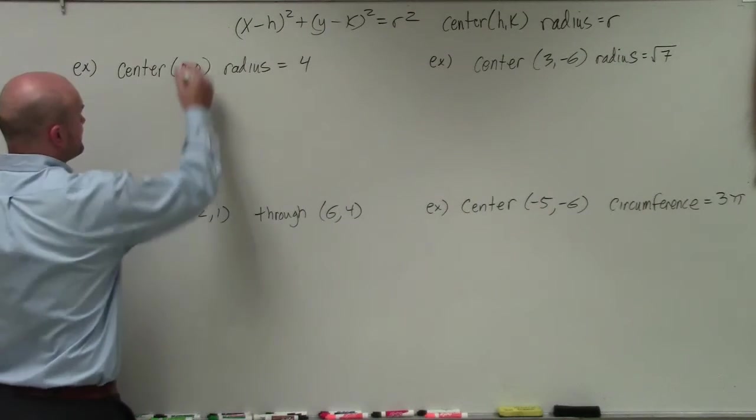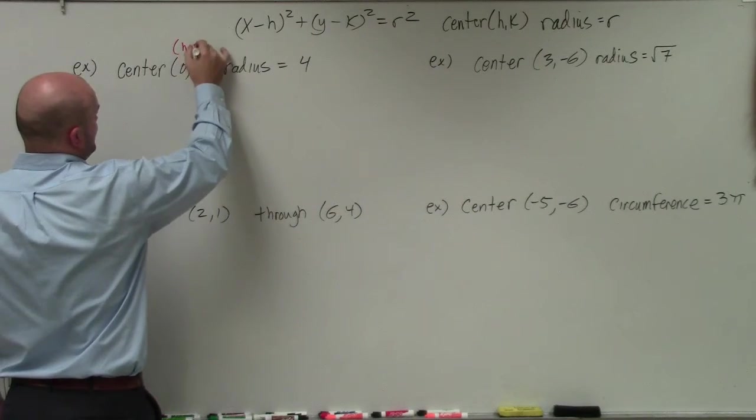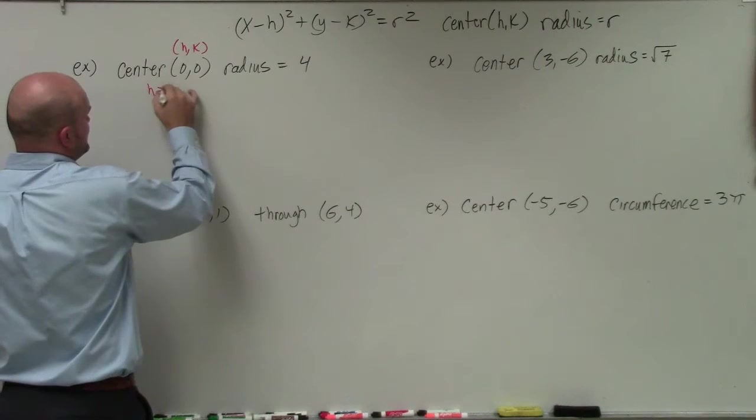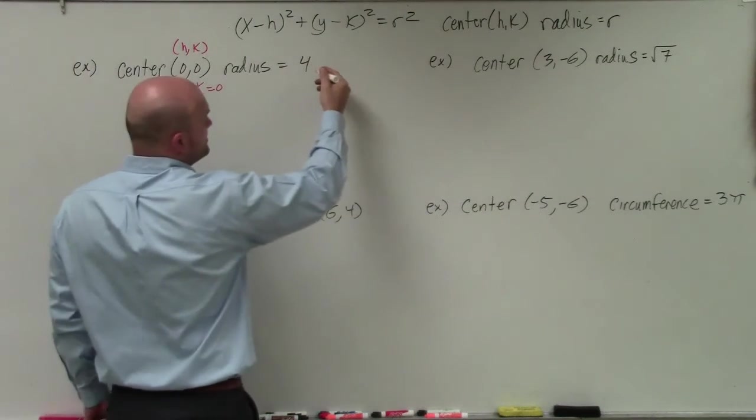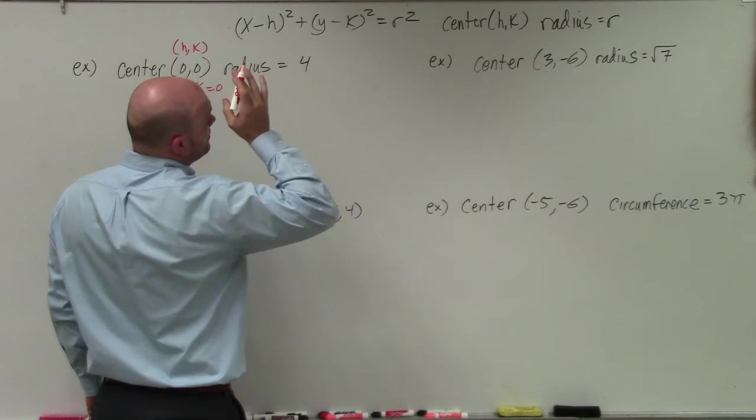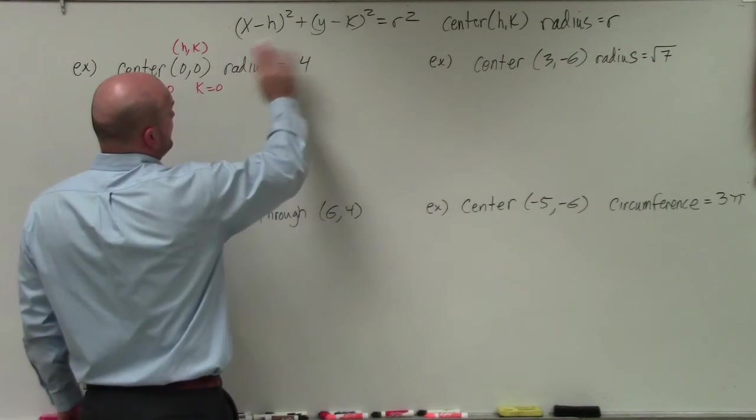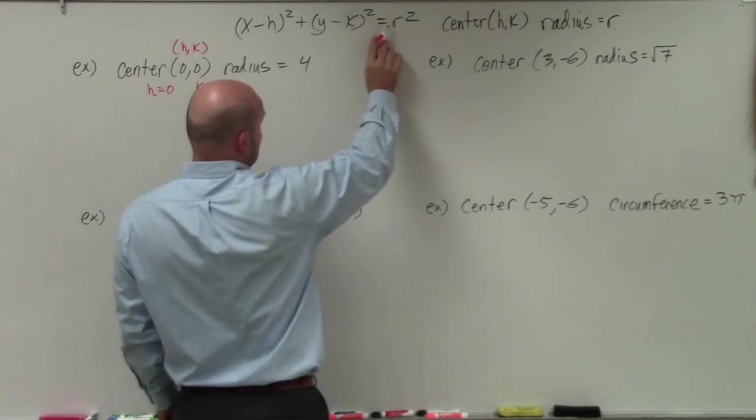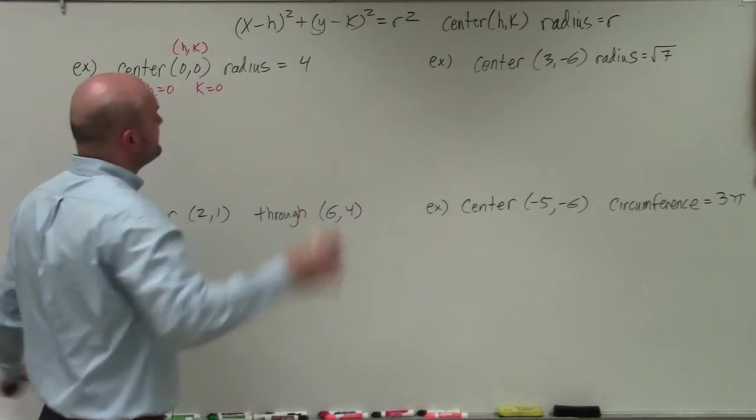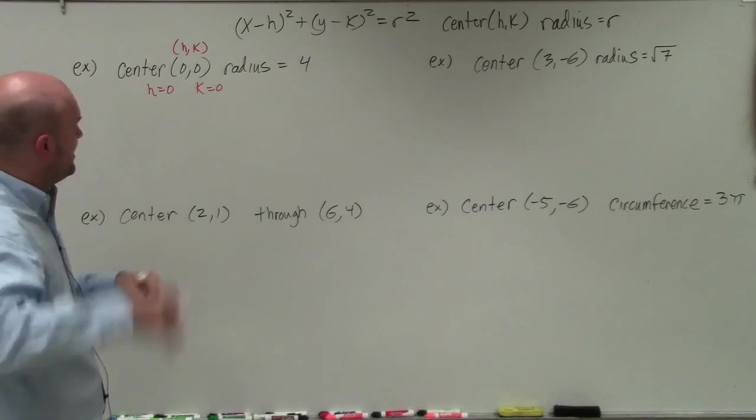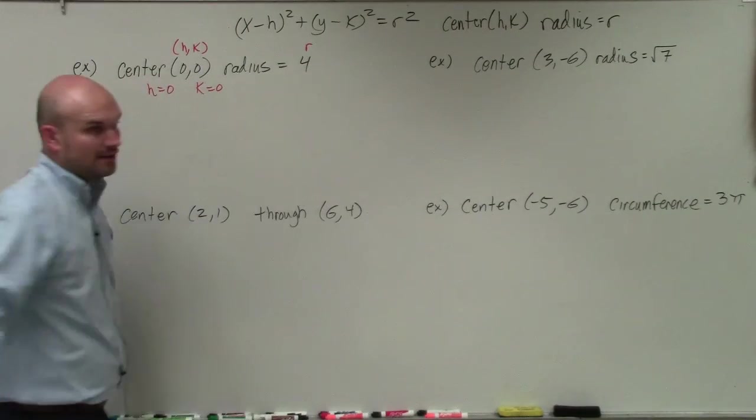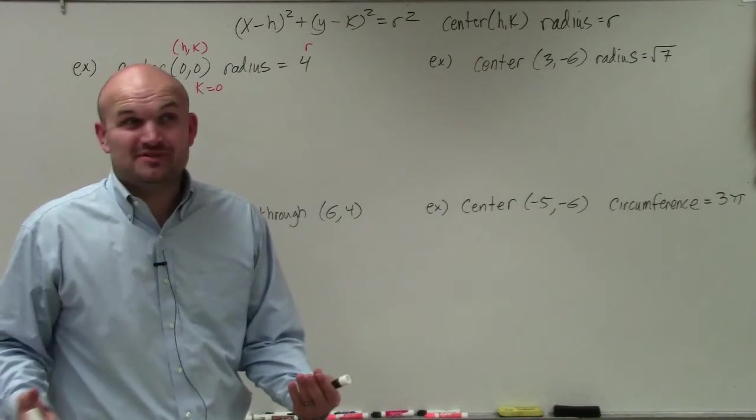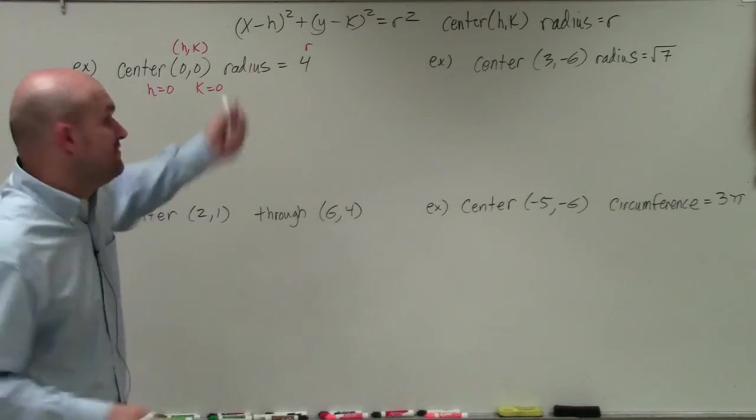So in this case, remember the center you can see is hk. So I'm just going to write hk above that. So I can see that h is equal to 0 and k is equal to 0. We know that the radius is equal to r. So we can say radius is just r. So now to write the equation, I'm just going to take the equation and then plug in the values that we're given.